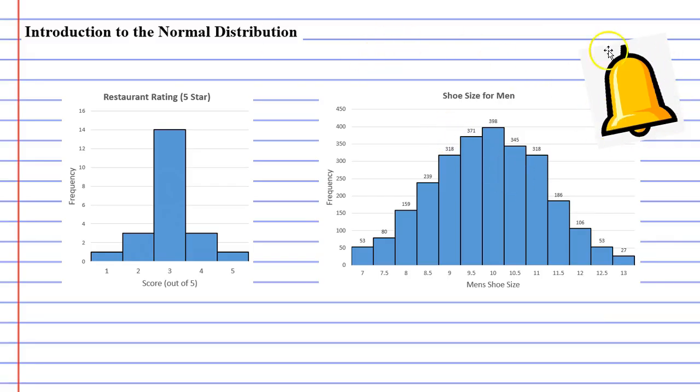You may be wondering why I have a picture of a bell. Well, the reason is because these graphs have a bell shape to them. And when we talk about normally distributed data, we often talk about how it has a bell shaped curve.